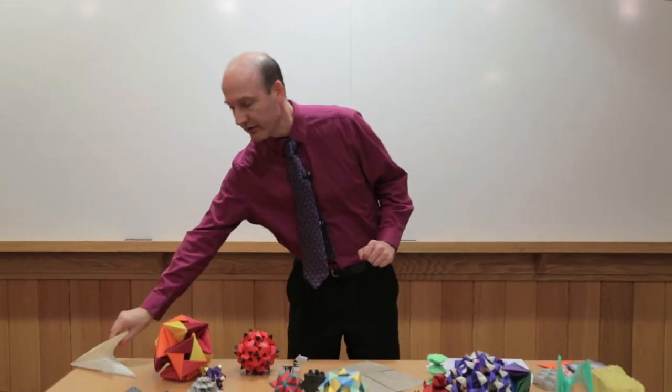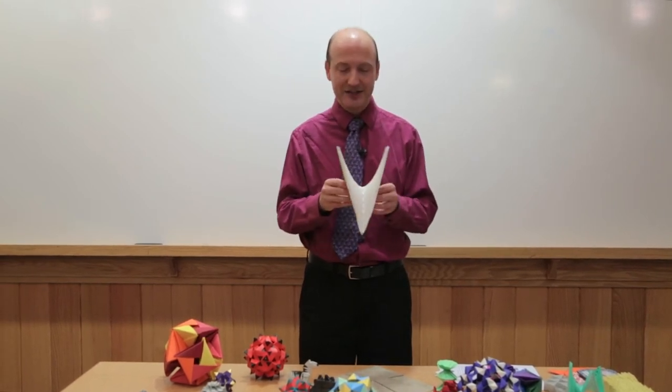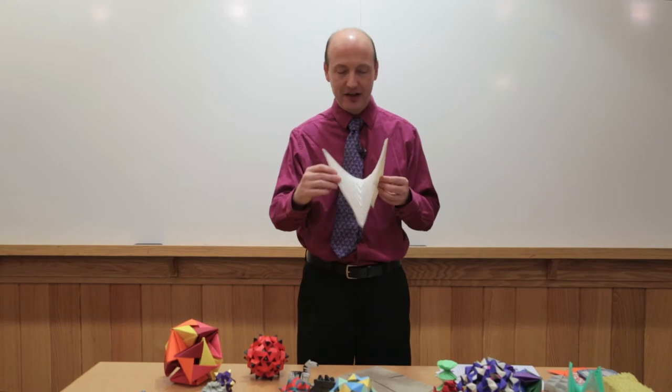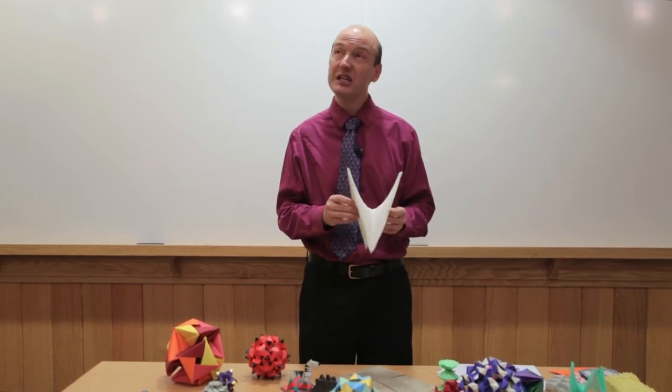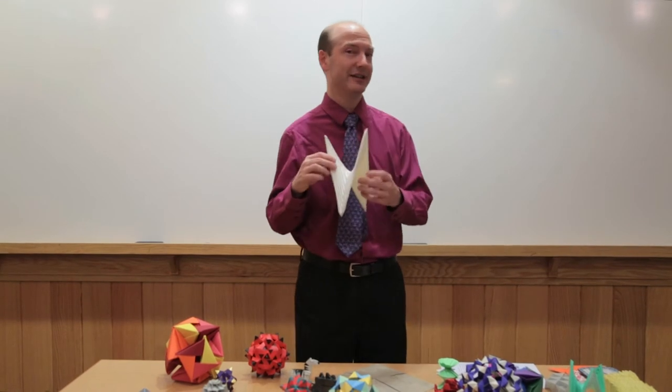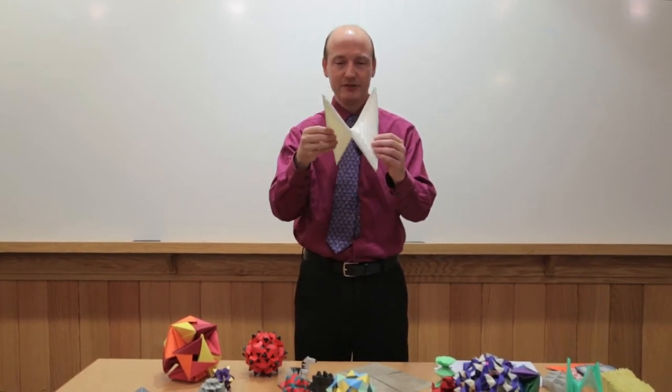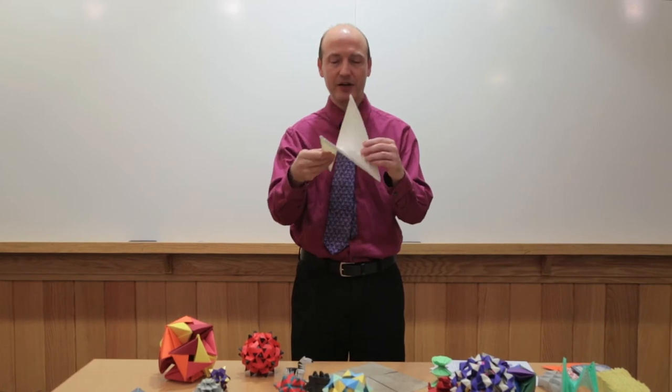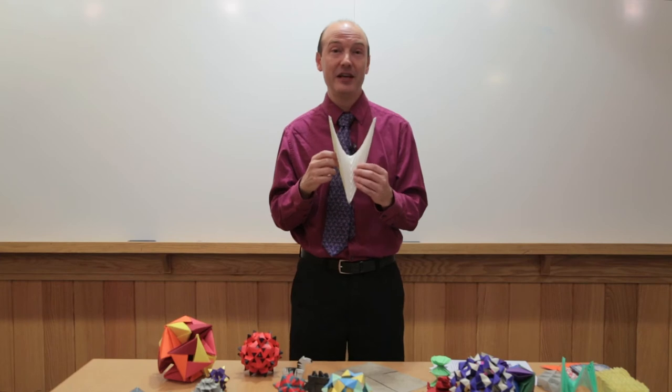But there are other models here that are made from one piece of paper that are strictly geometrical. That aren't animals or anything. Here is one. This is a model I like to teach my Calc 3 students whenever I'm teaching Calc 3. This is a hyperbolic paraboloid. It's a 3D surface that can be made by the equation z equals x squared minus y squared. It's actually an approximation of that saddle point or what we call a hyperbolic paraboloid.